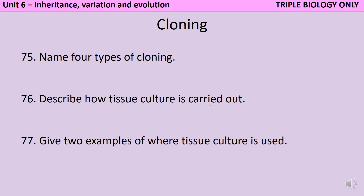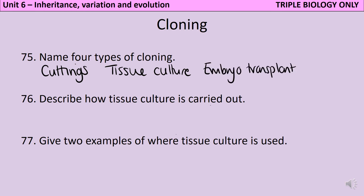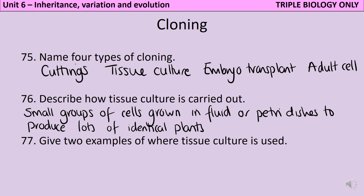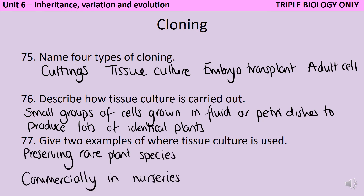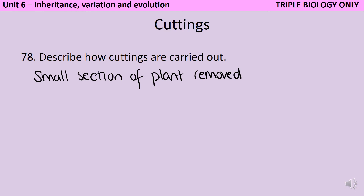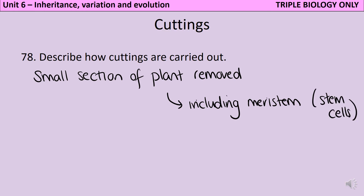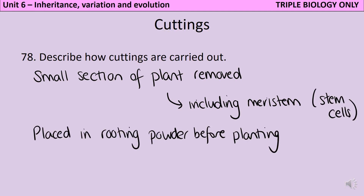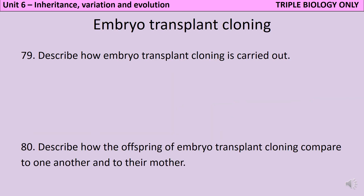The four types of cloning in GCSE Biology are cuttings, tissue culture, embryo transplant cloning, and adult cell cloning. Tissue culture is carried out when small groups of cells are grown in a growth medium or on Petri dishes. The advantage is that it produces lots of identical plants, which is particularly important for preserving rare plant species but is also done commercially in nurseries. To take a cutting of a plant, you remove a small section that must include a meristem - the source of stem cells - which is then placed in rooting powder before being planted.